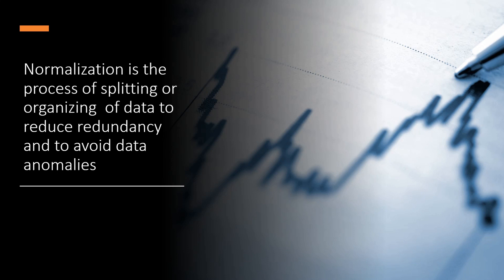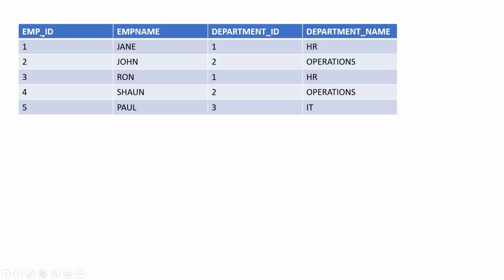The standard definition says normalization is a process of splitting a table or organizing a database to reduce data redundancy and to eliminate data anomalies. We have a table that contains the information of an employee and the department he or she belongs to. The department name info is redundant and we will see HR for every person who works in department ID 1.